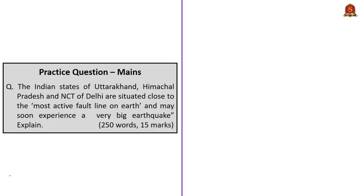Let us take up this mains question: 'The Indian states of Uttarakhand, Himachal Pradesh and NCT of Delhi are situated close to the most active fault line on earth and soon may experience a very big earthquake — explain.' This question is based on the geography news article where we discussed earthquakes, how they occur, the Himalayan region, and the Great Himalayan earthquake. Use those points to write your answer within 250 words. Please write the answers and post them in the comment section and we will get back to you with necessary feedback.